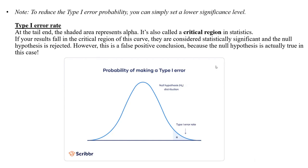The Type 1 error rate is represented by the shaded area called the critical region. In statistics, if our result lies in the critical region, it means the result is statistically significant and the null hypothesis can be rejected — but this is a false positive conclusion because the null hypothesis is actually correct in this case. This is where alpha appears.